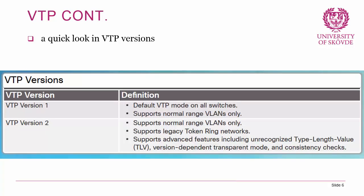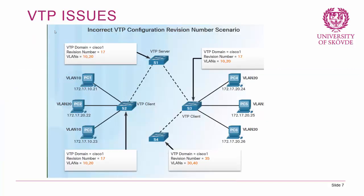There are VTP versions 1 and 2. Version 1 is the default and supports normal range VLANs only. VTP version 2 also supports normal range VLANs but additionally supports legacy token ring networks and advanced features including unrecognized type-length-values, version-dependent transparent mode, and consistency checks. You should know that there are different versions even if we won't cover all details in this course.